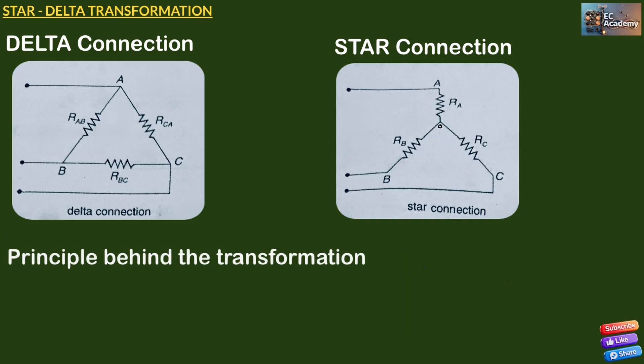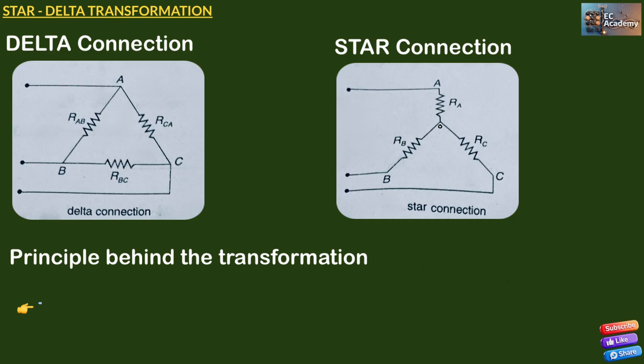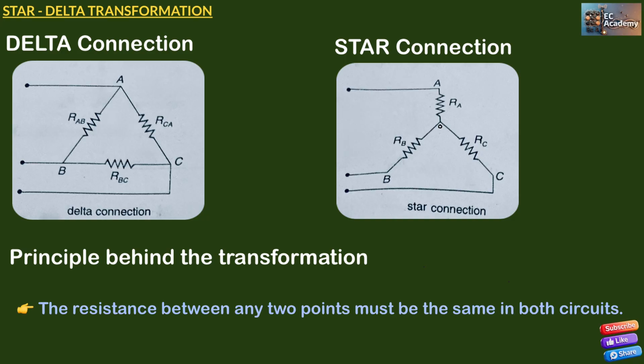Now, the principle of transformation. The principle is simple: the resistance between any two points in both connections must be the same. So the resistance between A and B in the delta circuit must be equal to the resistance between A and B in the equivalent star circuit. This rule helps us derive the conversion formulas.